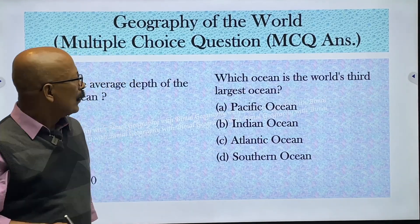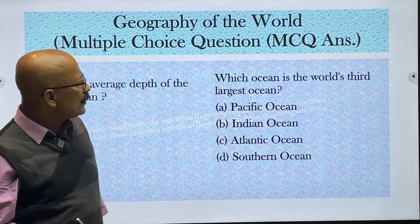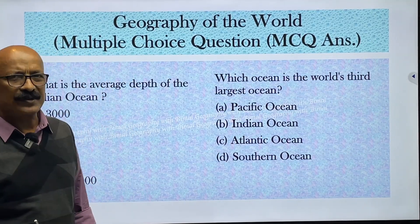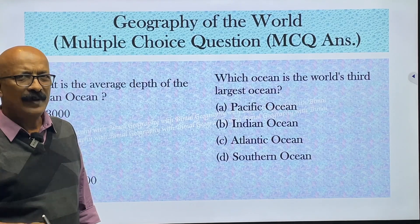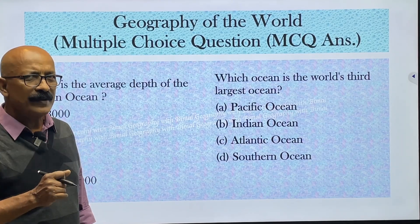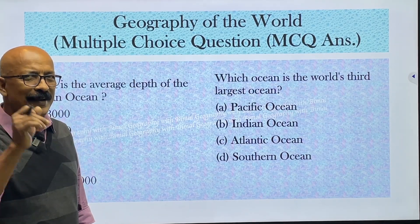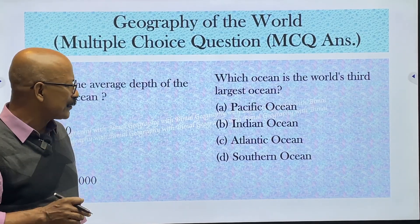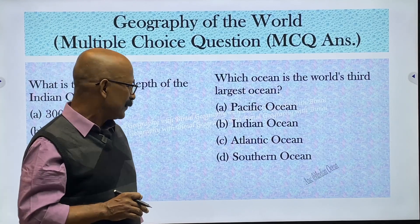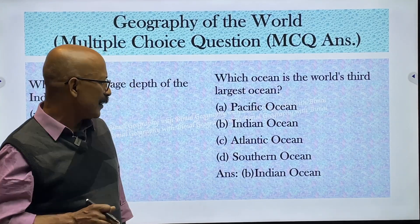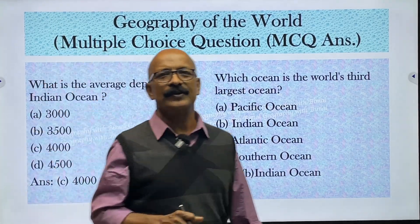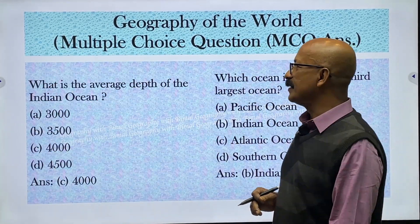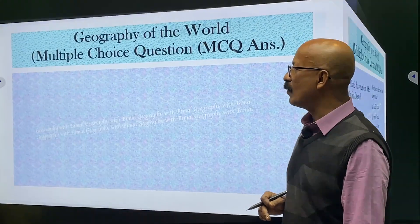Which is the world's third largest ocean? Number one is Pacific, number two is Atlantic, and number three is Indian Ocean. Yes, the Indian Ocean is the third largest ocean in the world.